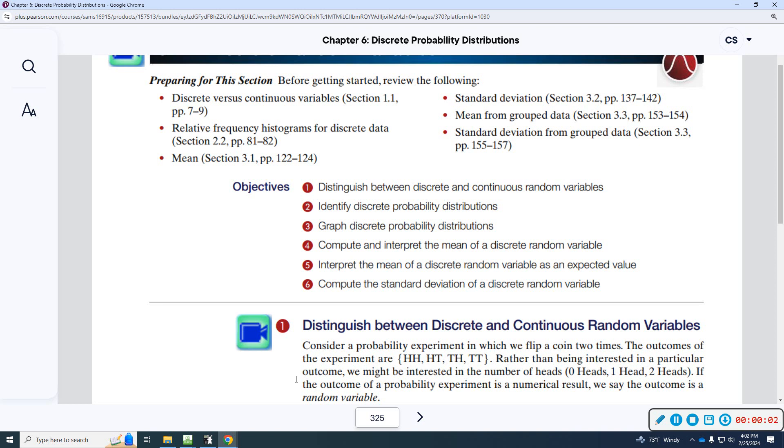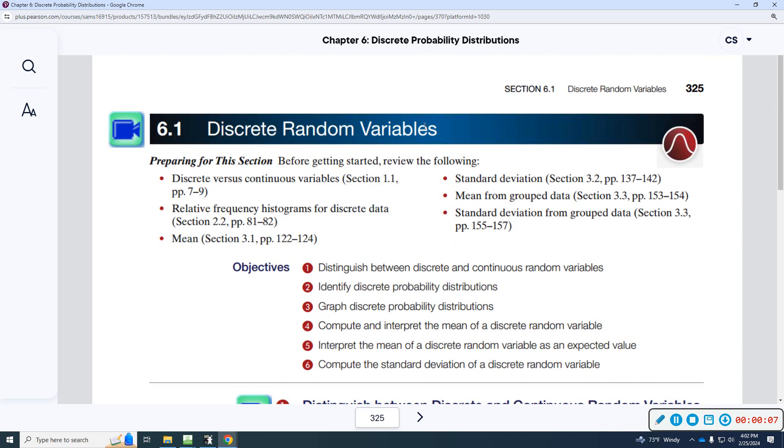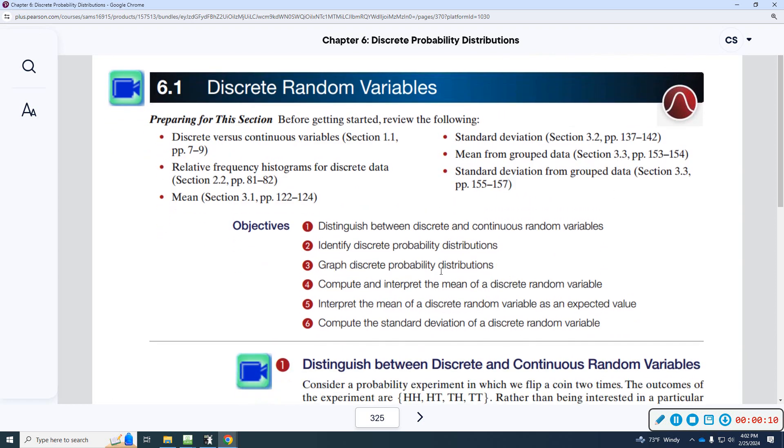All right, today we're going to be looking at section 6.1. This is discrete random variables. These are the objectives.